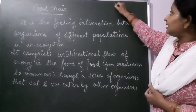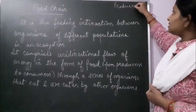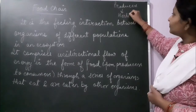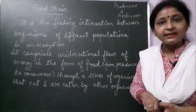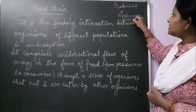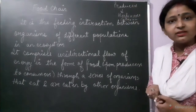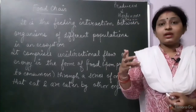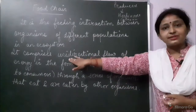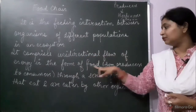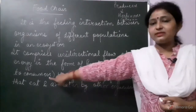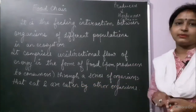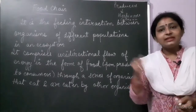I have given you an example here. Producers — the green plants — are eaten up by herbivores, and these herbivores are then eaten up by carnivores. You can see that there is a unidirectional flow of energy in the form of food. So a food chain comprises unidirectional flow of energy in the form of food from producers to consumers, through a series of organisms that eat and are eaten by other organisms.